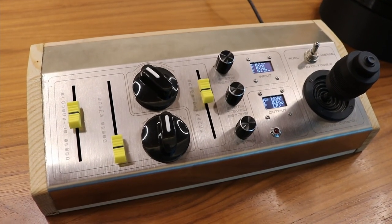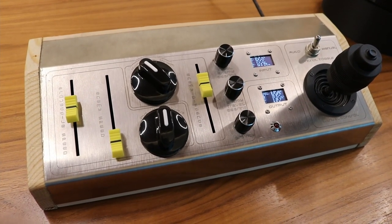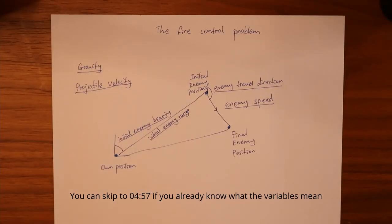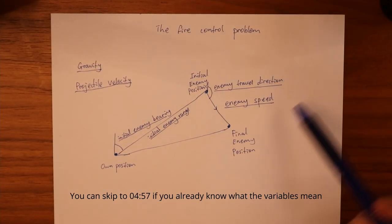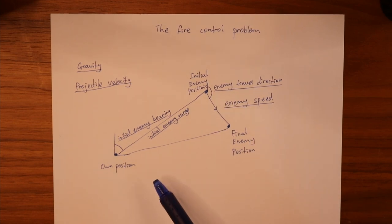And to explain exactly what these inputs mean let me get a piece of paper. The turret aimer solves a problem called the fire control problem, which is where you need to hit a moving target with a projectile that follows the laws of gravity.